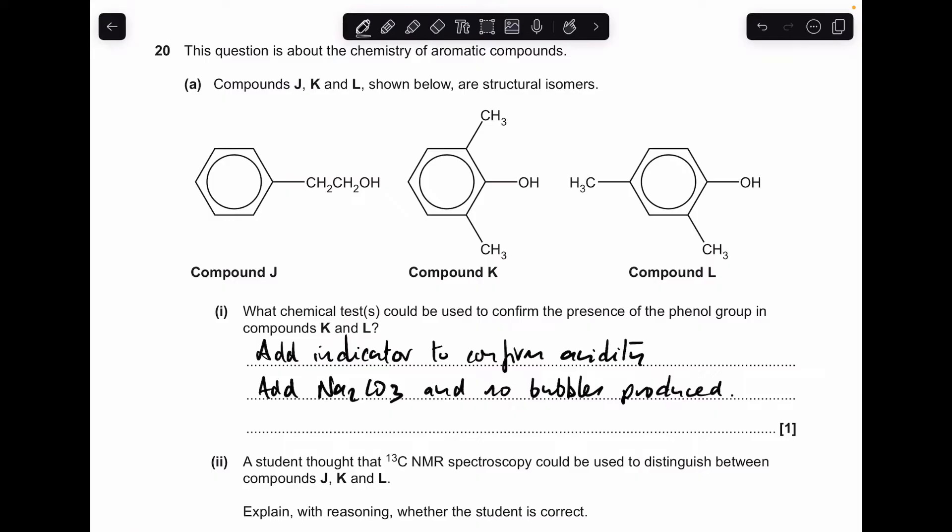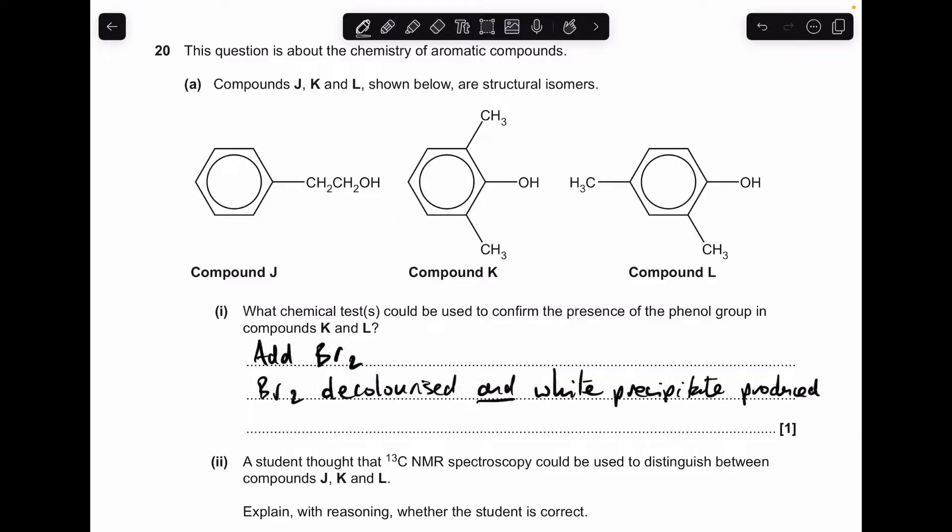So make a start. There's a few things you can say for the first question. The one I would go for is add indicator to confirm acidity and then you would add sodium carbonate and you shouldn't see any bubbles. Alternatively you could add bromine and the bromine should be decolourised and you also get a white precipitate. The other possible answer here is to add FeCl3 and you should get a violet or purple colour produced.